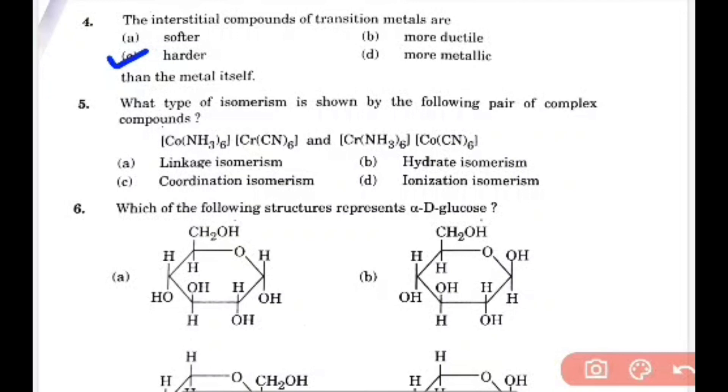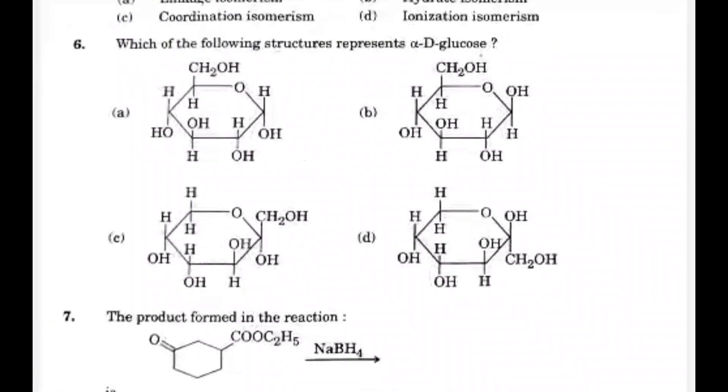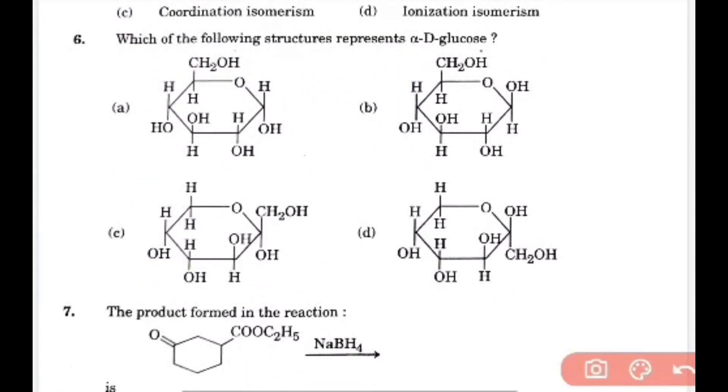What type of isomerism is shown by the following pair of complex compounds? It shows coordination isomerism. Which of the following structures represent alpha-D glucose? Option A shows the alpha-D glucose.